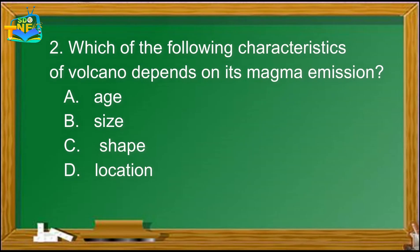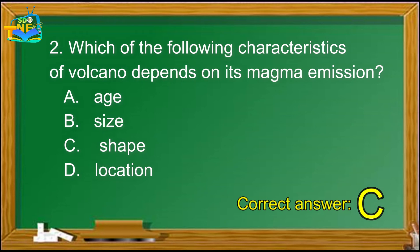Question 2: Which of the following characteristics of a volcano depends on its magma emission? A. Age, B. Size, C. Shape, D. Location. The correct answer is letter C — Shape.